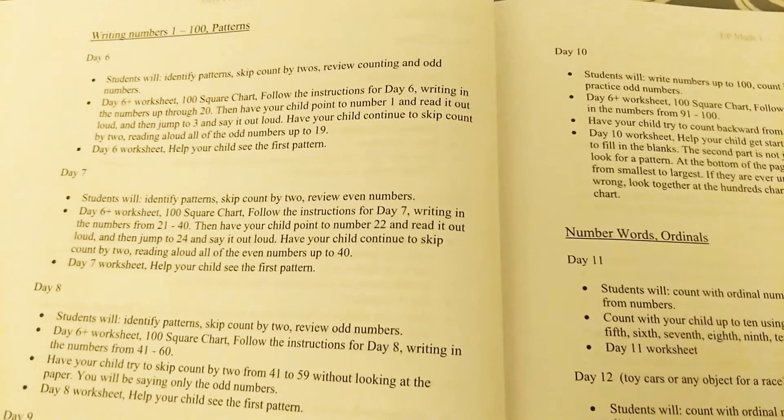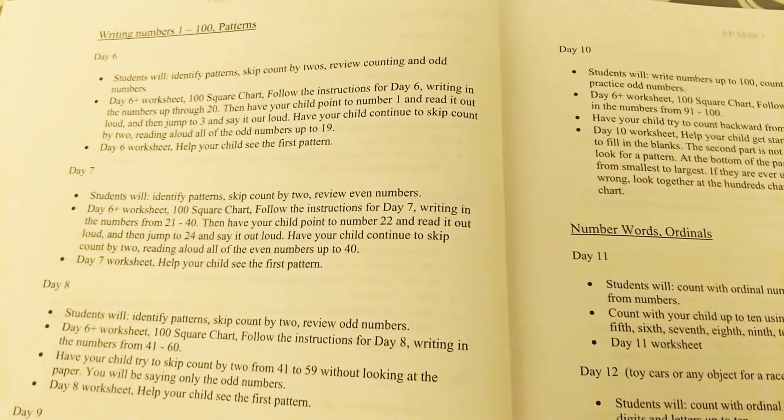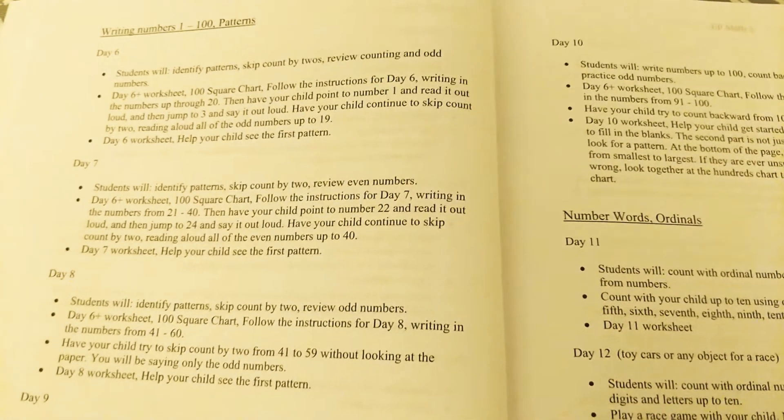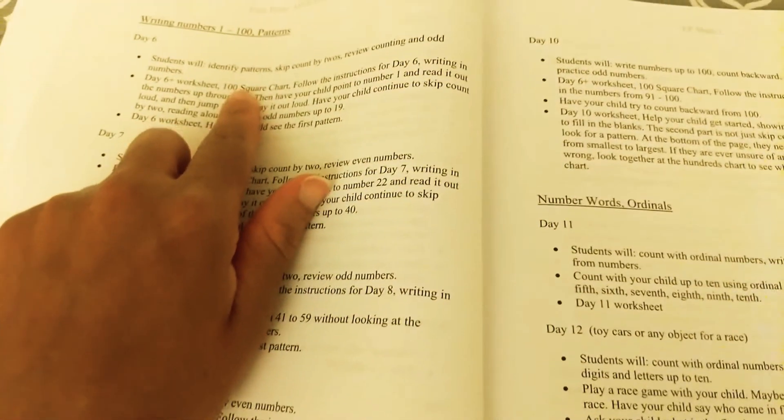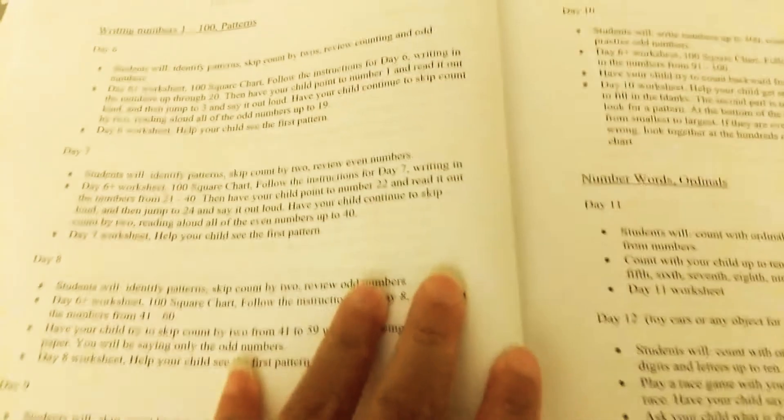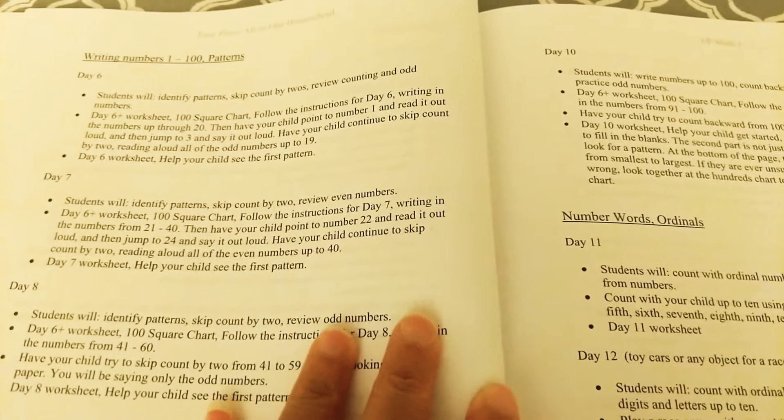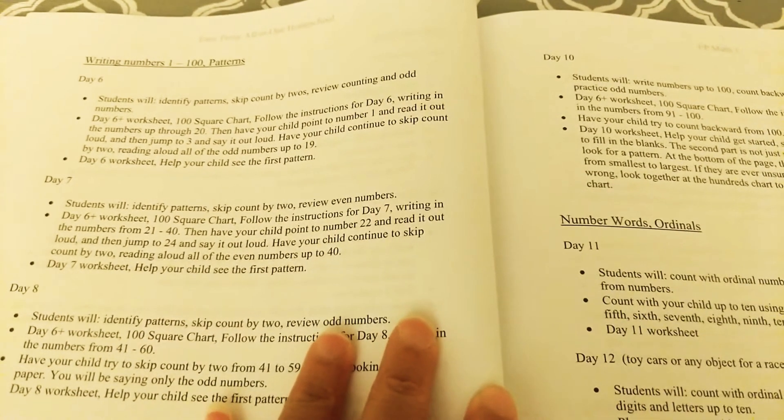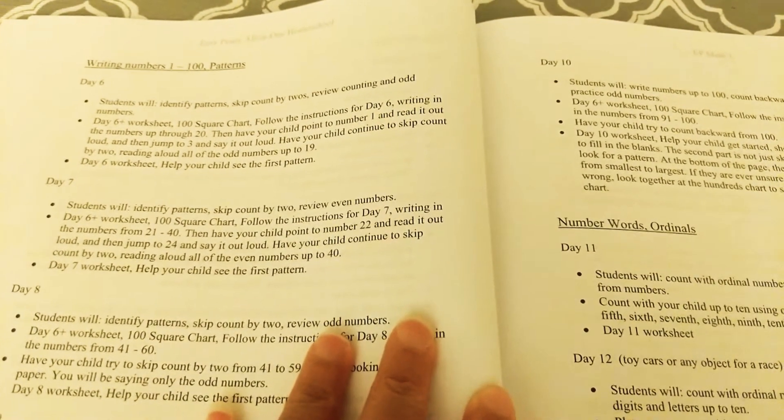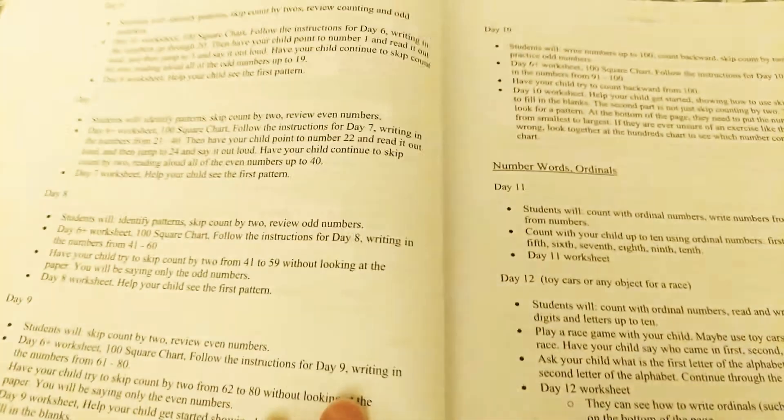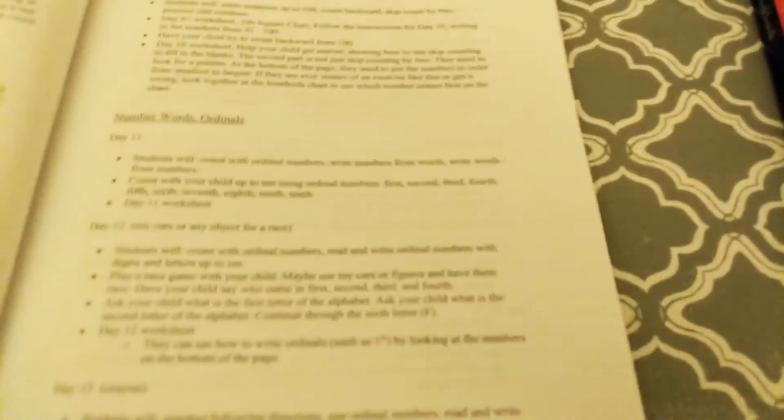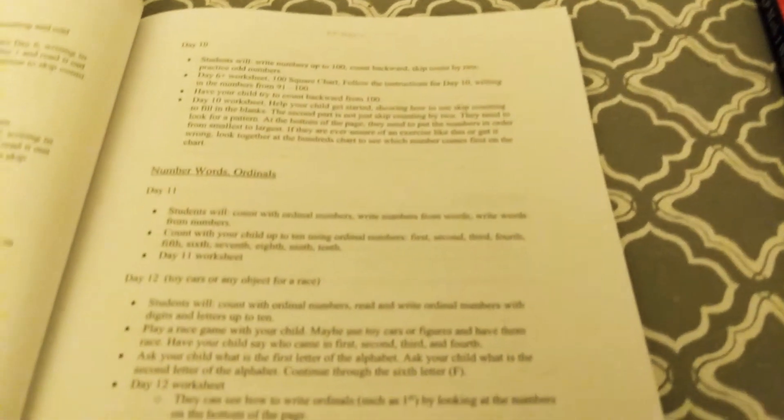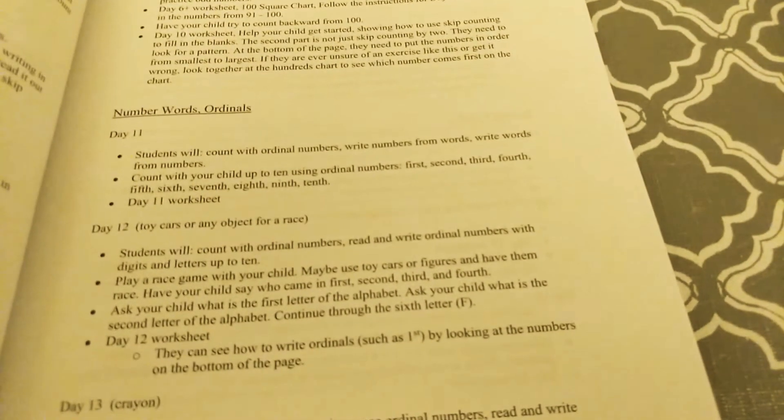And then day six we'll start with writing numbers one through one hundred and do patterns. Again, students will identify patterns, skip count by two, review counting and odd numbers. So there it is, and that goes through nine, ten, and then starting at eleven.